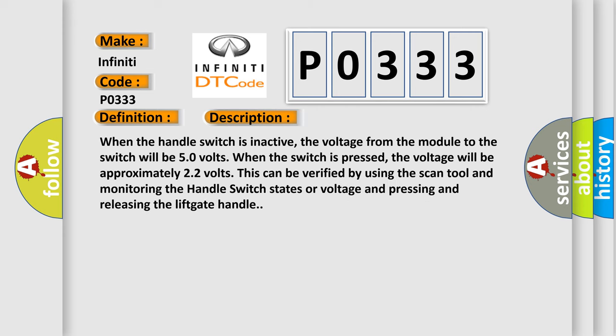When the handle switch is inactive, the voltage from the module to the switch will be 50 volts. When the switch is pressed, the voltage will be approximately 22 volts. This can be verified by using the scan tool and monitoring the handle switch states or voltage and pressing and releasing the liftgate handle.